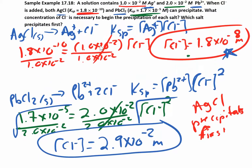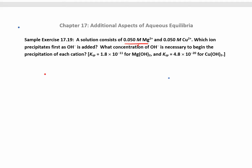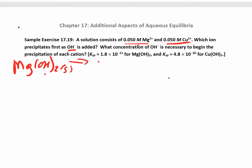Now here's another similar problem. This time you have magnesium ions and copper ions in your solution, and they want to know which ion is going to precipitate first with hydroxide. They give us the KSPs for magnesium hydroxide and copper(II) hydroxide, along with the ion concentrations. It's set up the same way — just different reactions. Let's write out these reactions for magnesium hydroxide.